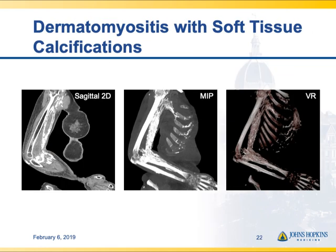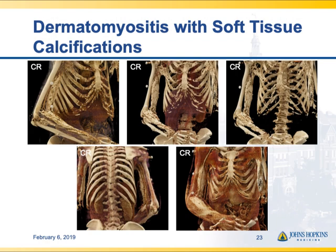Here's an interesting case: a patient with dermatomyositis with extensive soft tissue calcifications extending throughout the muscles of the upper arm and forearm. The MIP images nicely bring out all the calcifications, but the cinematic rendered images show the relative positions of calcifications compared to vascular or nervous structures, as well as the texture and density of the calcifications, with higher definition than volume rendering.